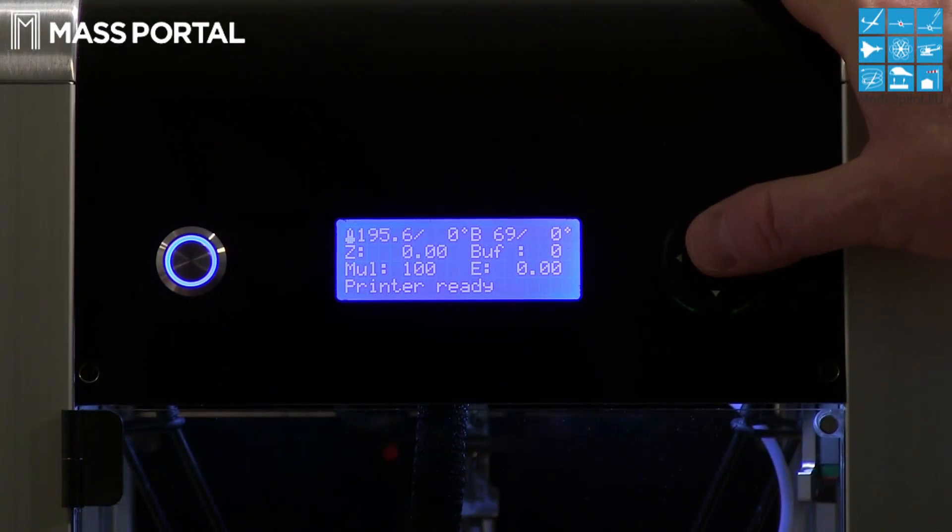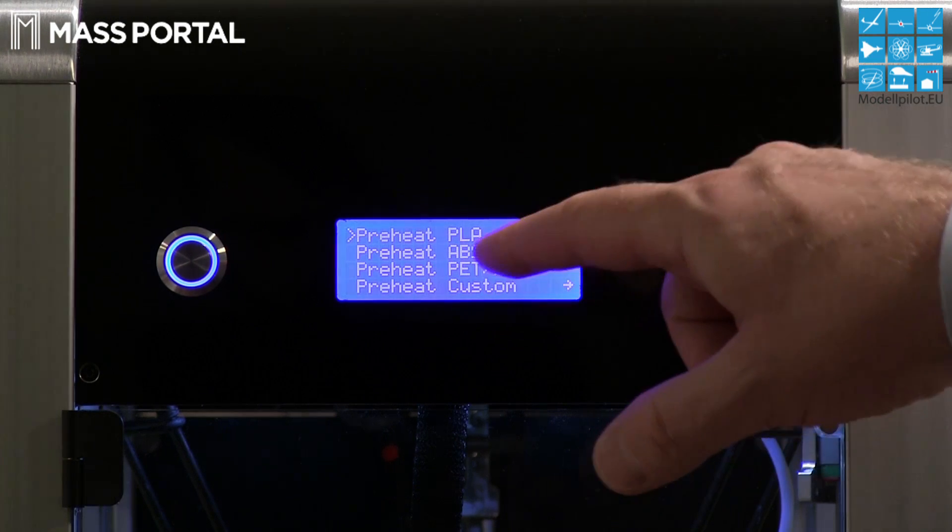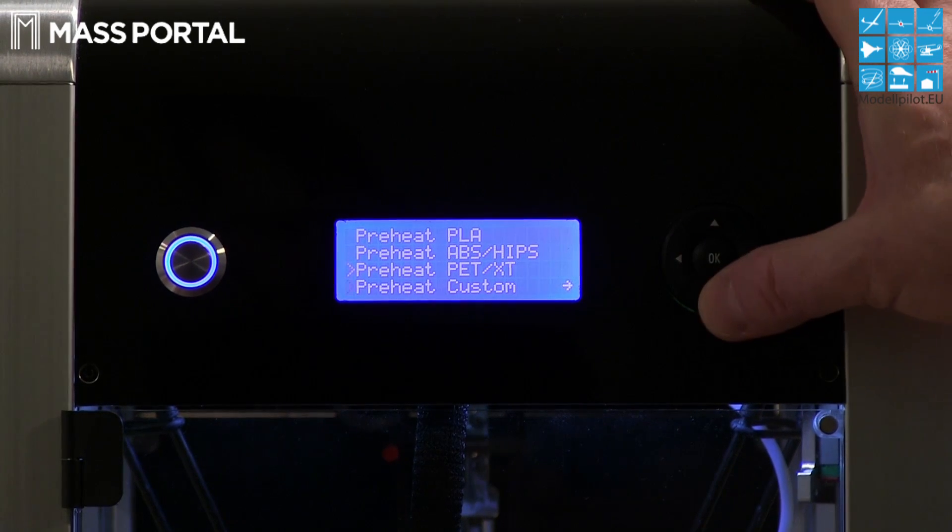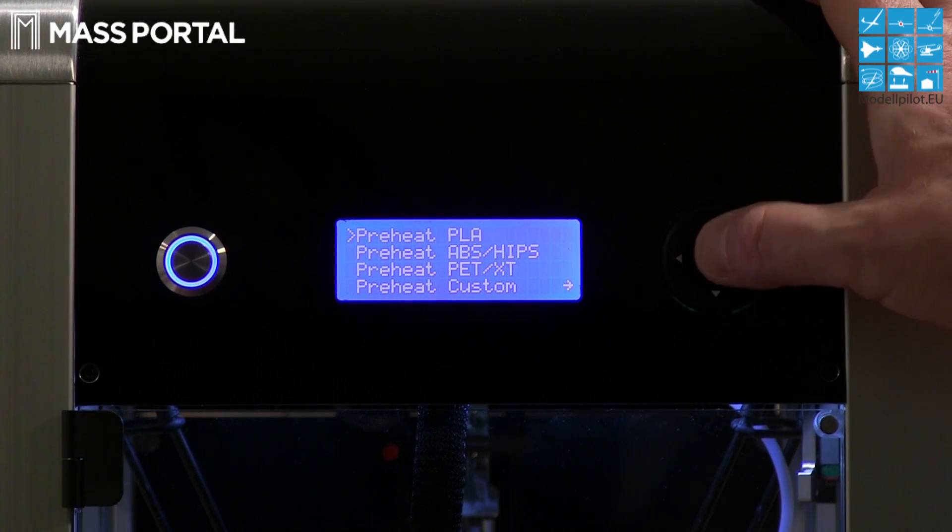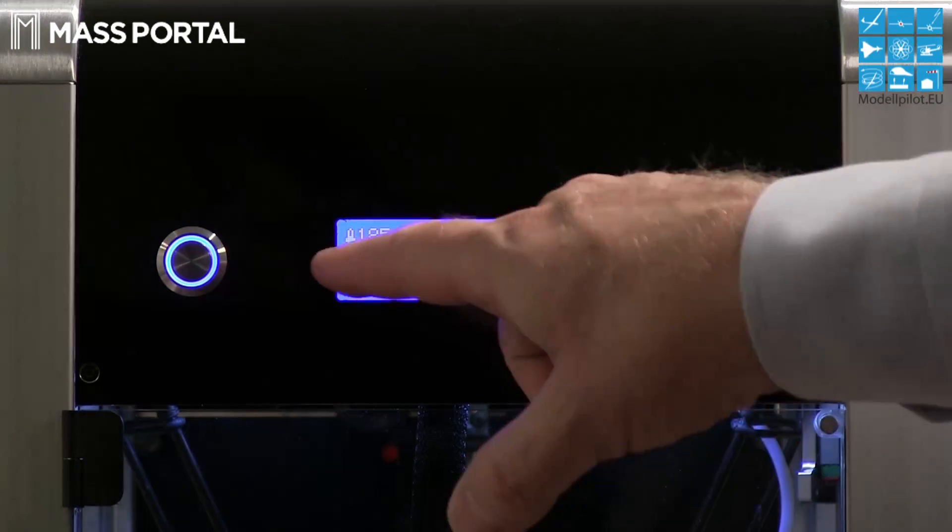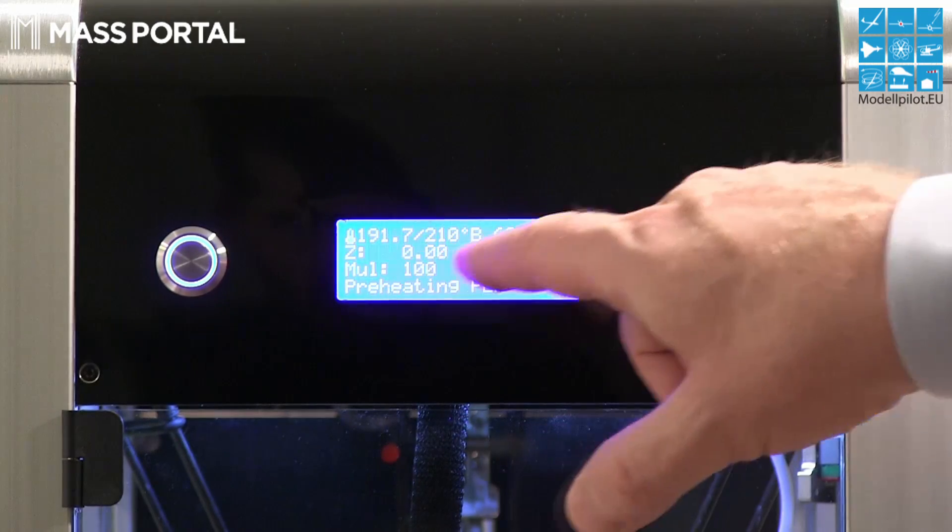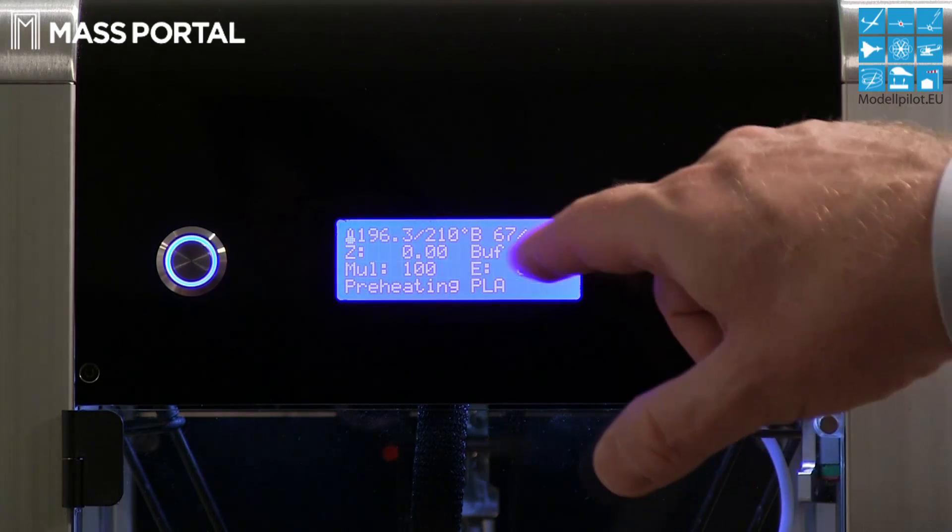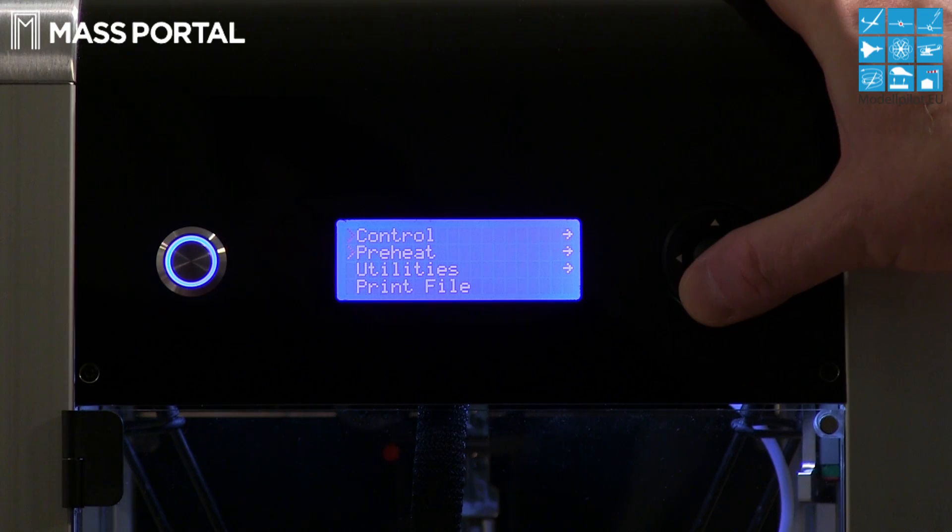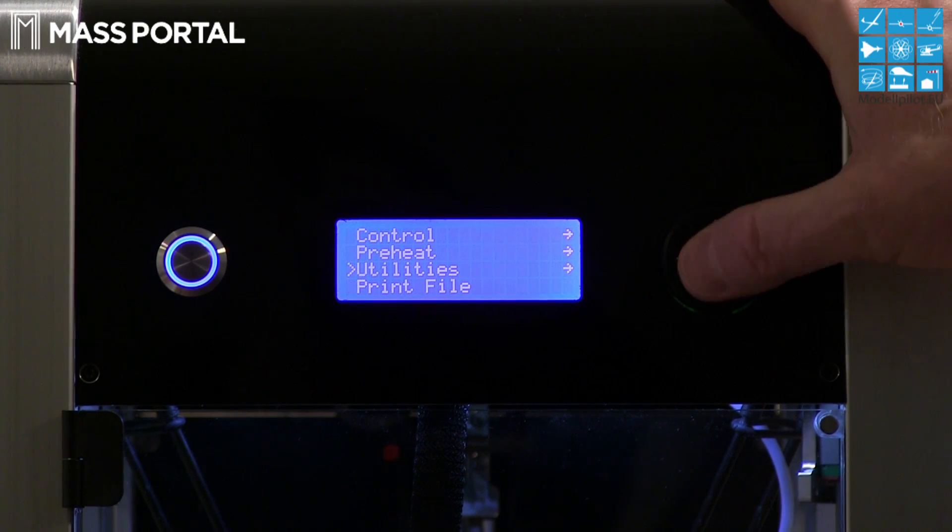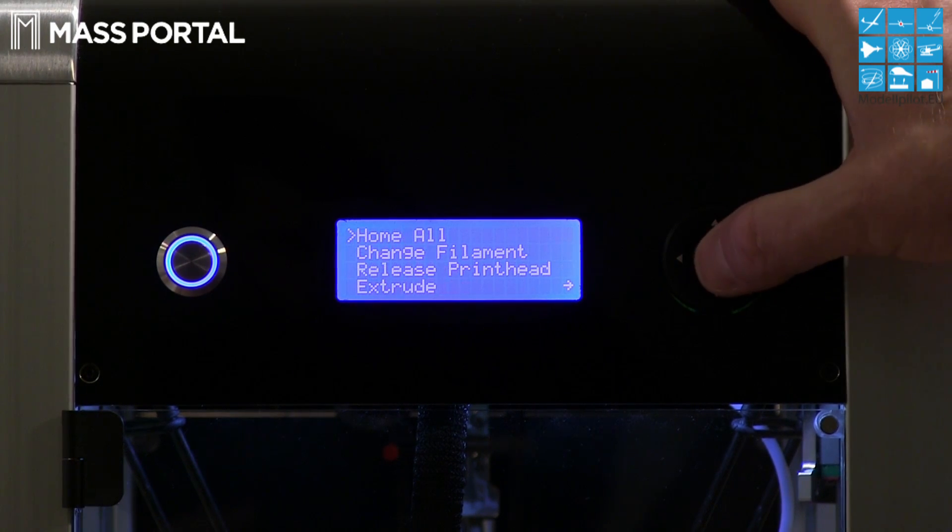Now something about the configuration. You go to preheat and you have some PLA, ABS, HIPS, PET, XT, and your custom cool down. If you go to PLA, 210 degrees must be reached for the nozzle and 60 degrees for the print bed. You have some preheat. I told you the utilities.